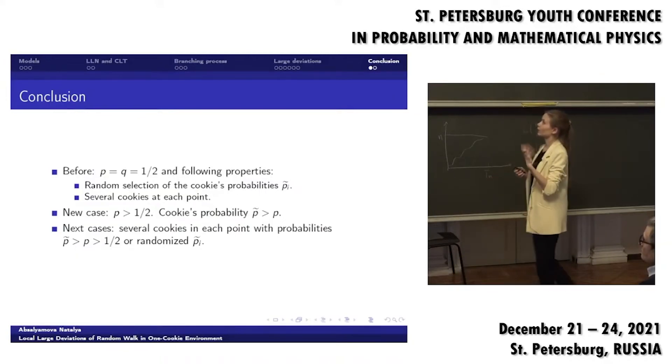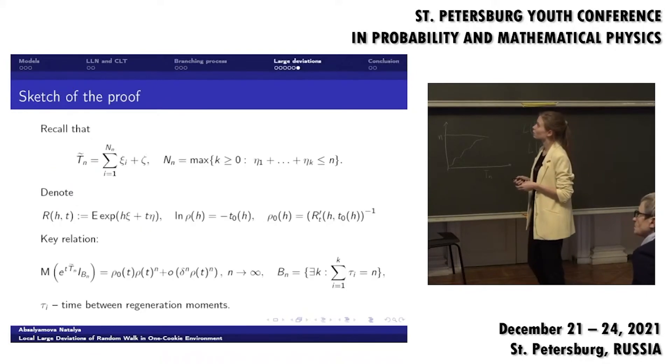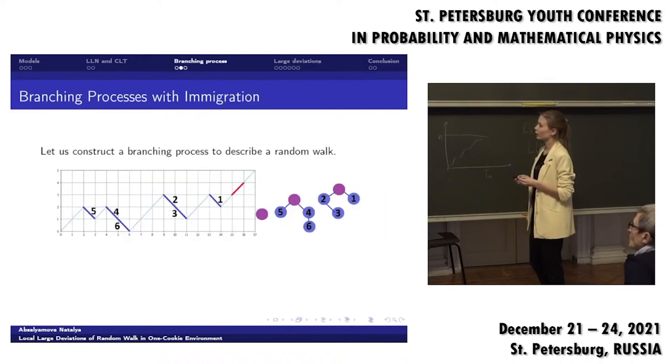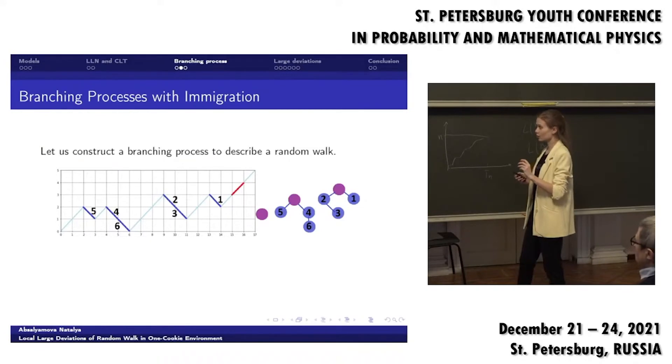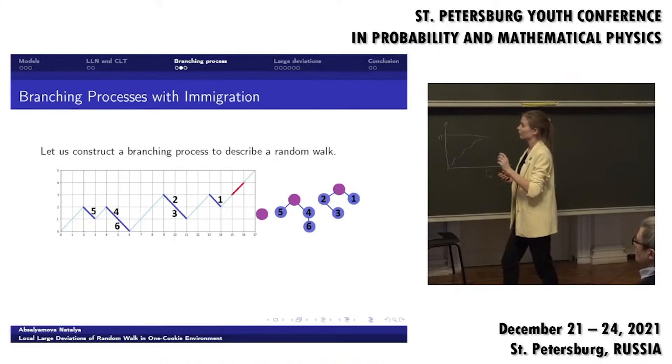But there are some issues in this case because let's return to the branching process. If we have more than one cookie, then descendants from one particle will change the distribution of descendants from another particle. Like if migrant has descendants, then on this level other descendants will be distributed like geometric. But if migrant has no descendants, then the first particle on this level, first particle like particle 5, I think, will have number of descendants not equal to geometric.